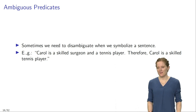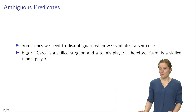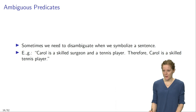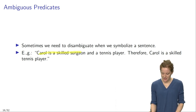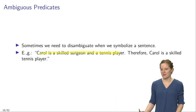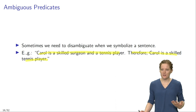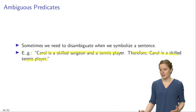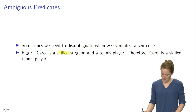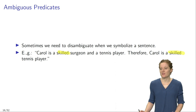A final important caveat: sometimes we need to disambiguate similar-sounding predicates when we symbolize a sentence. Consider the argument: 'Carol is a skilled surgeon and a tennis player; therefore Carol is a skilled tennis player.' This clearly does not follow — just because Carol is skilled as a surgeon doesn't mean she is skilled as a tennis player. To explain why this argument is invalid, we need to symbolize the two uses of the word 'skilled' by means of different predicates and disambiguate them, even though in English they sound the same.